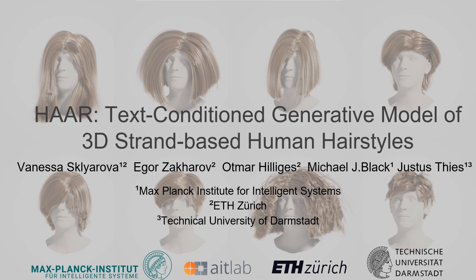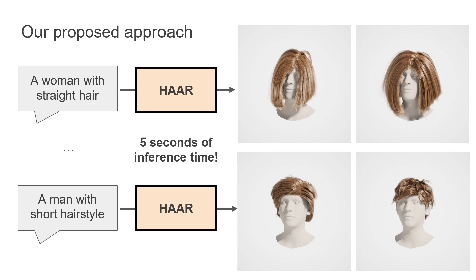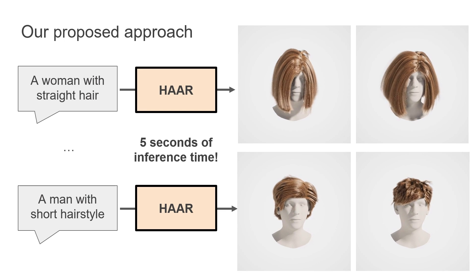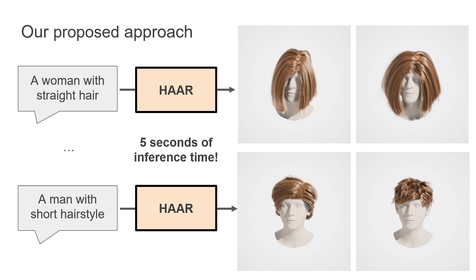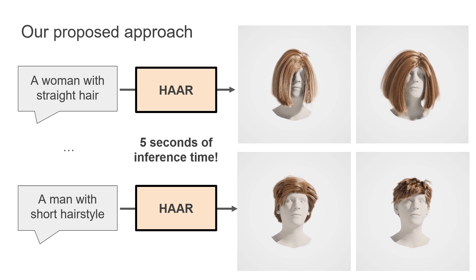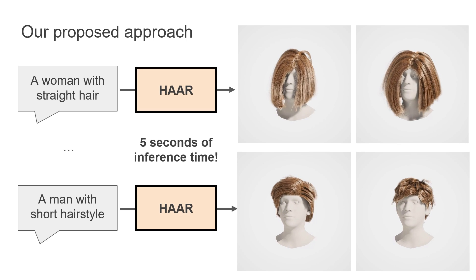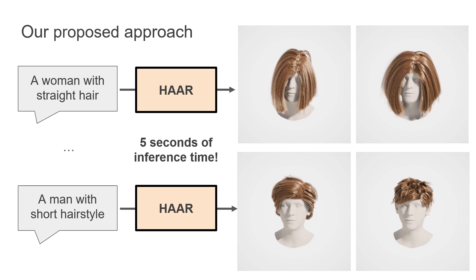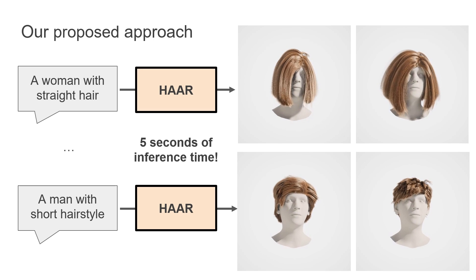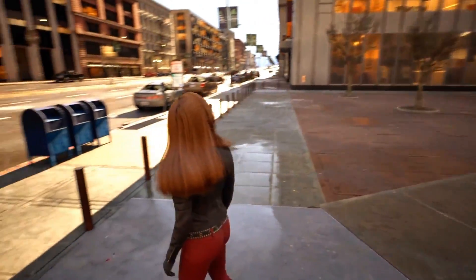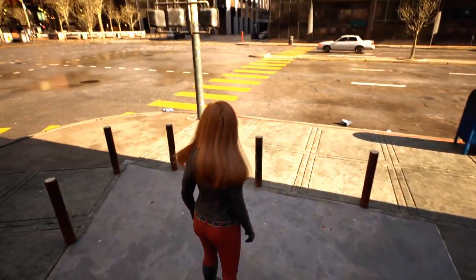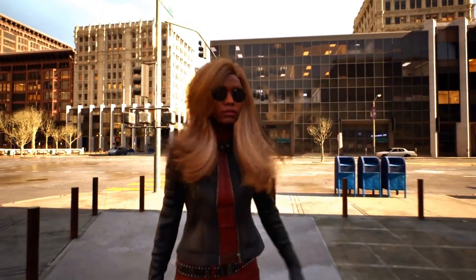We present HAIR, a new text-guided strand-based generative model for 3D human hairstyles. Using textual descriptions, HAIR can generate multiple variations of realistic strand-based 3D hairstyles in seconds. The hairstyles produced by our method are fully compatible with widely used computer graphics pipelines, and can be used in virtual environments as simulatable and realistically rendered production-level assets.